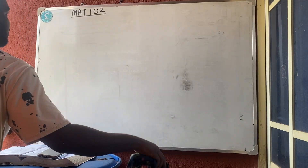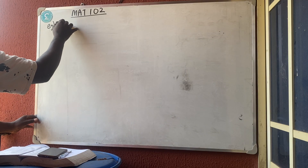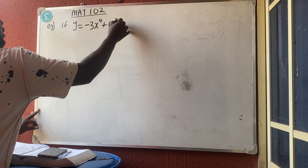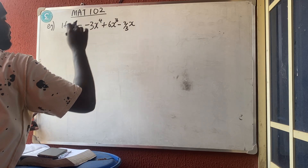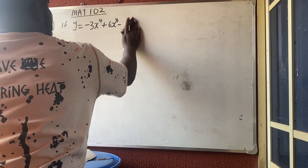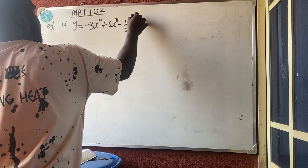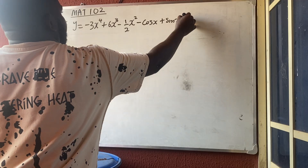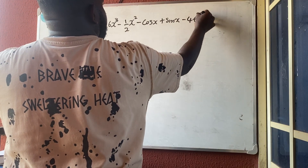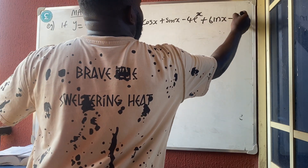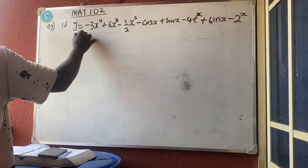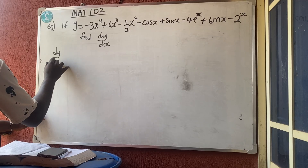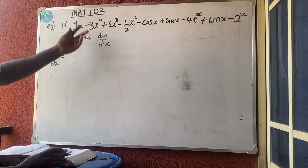Now a comprehensive example combining everything: if y = −3x^4 + 6x^3 − (1/2)x^2 − cos x + sin x − 4e^x + 6 ln x − 2^x, find dy/dx. It looks long but each term is handled by the standard rules.